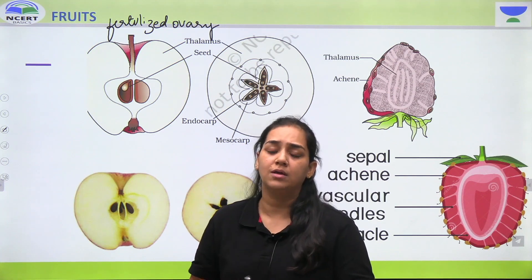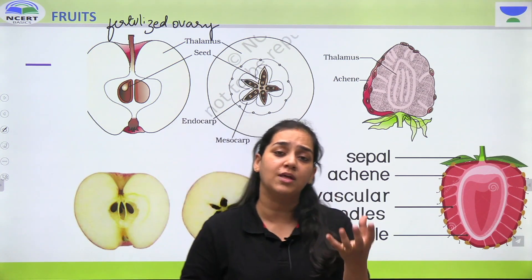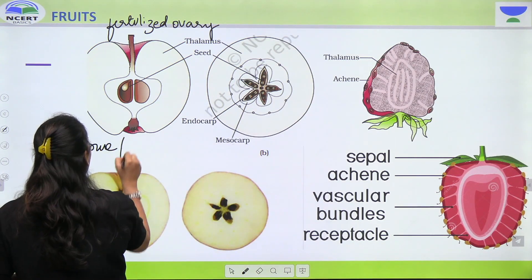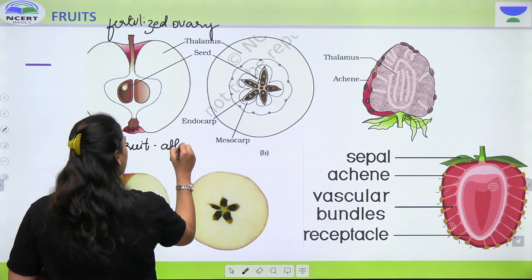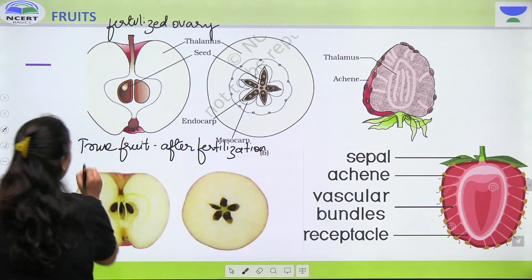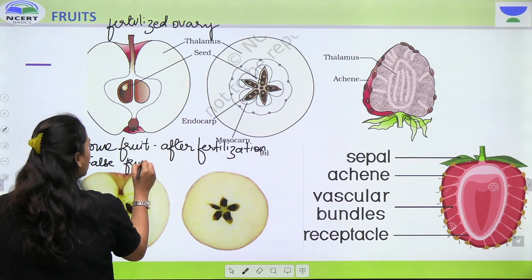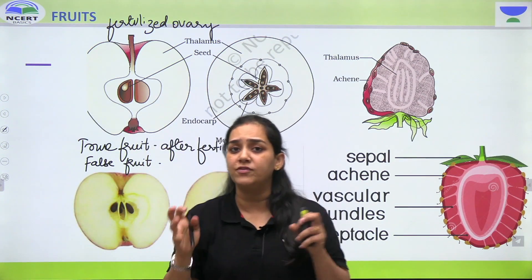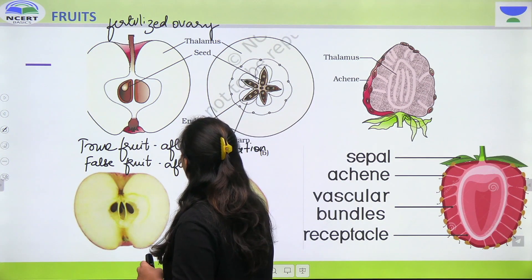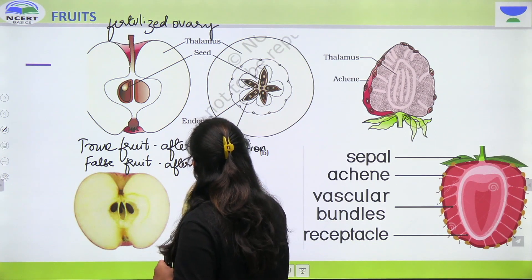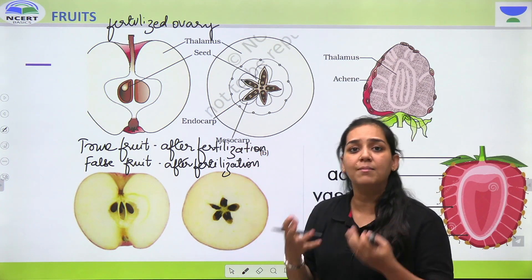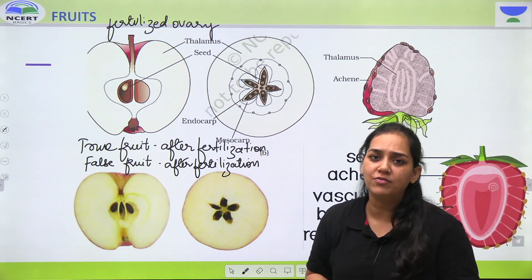Ab fruits mein kai tarah ke fruits hote hai. Jab ovary fertilization dikhata hai, toh aap jo fruit dekho ge usse bologe true fruit. Toh kiise kiise types milenge hame — ek milega true fruit, jo hota hai after the process of fertilization. Aur ek aur category aati hai jise hum bulaate hai false fruit. Bohot sare bachchon ko confusion hota hai ki false fruit is formed after fertilization or not. Toh aapko yahan peh yaad rakhna hai that false fruit is also formed after fertilization, but the parts that are involved in fruit formation vary. Toh true fruit aur false fruit dono bante fertilization ke baad hi hai, but jo part fruit banta hai woh different hai in both the cases.